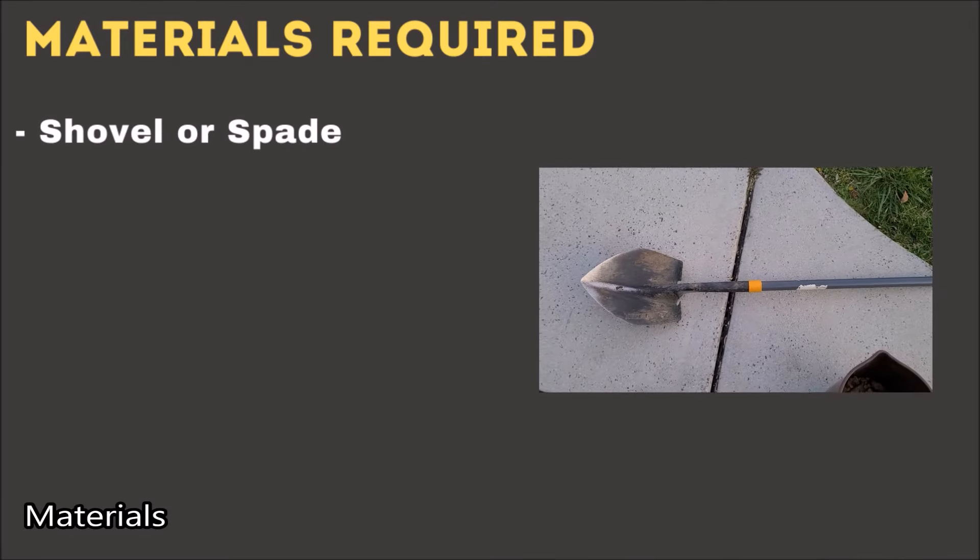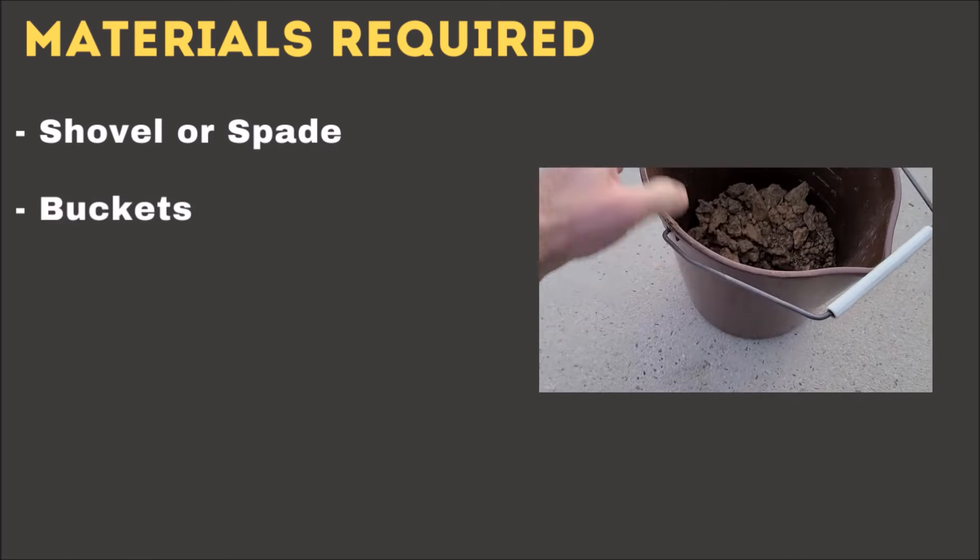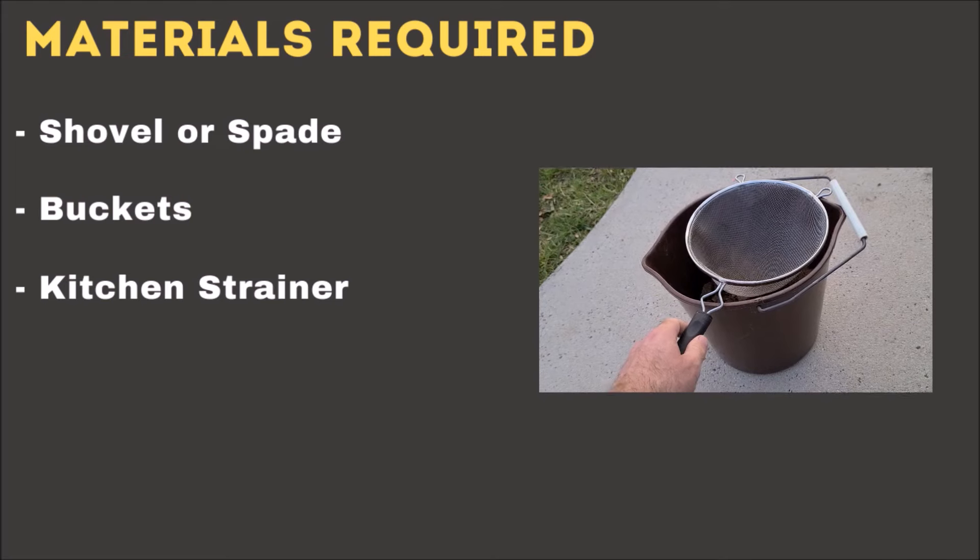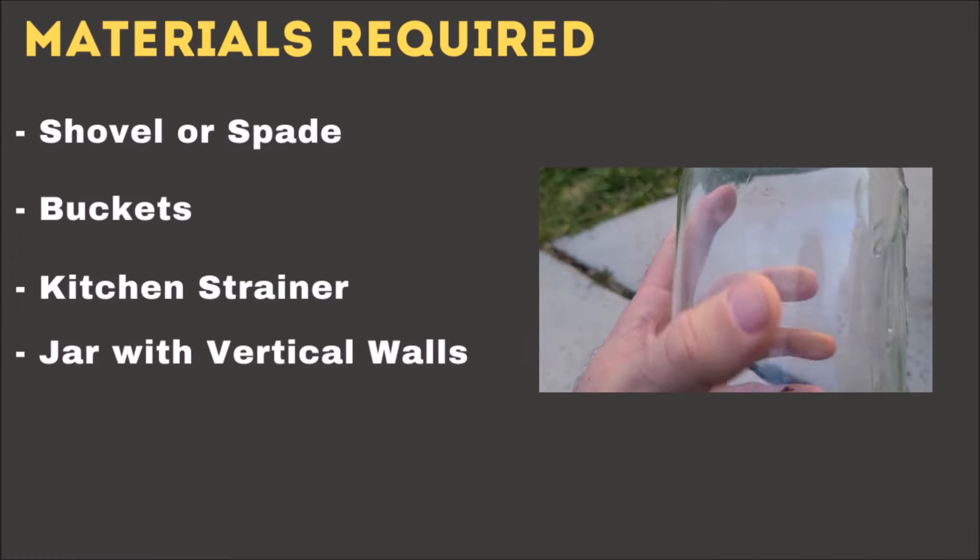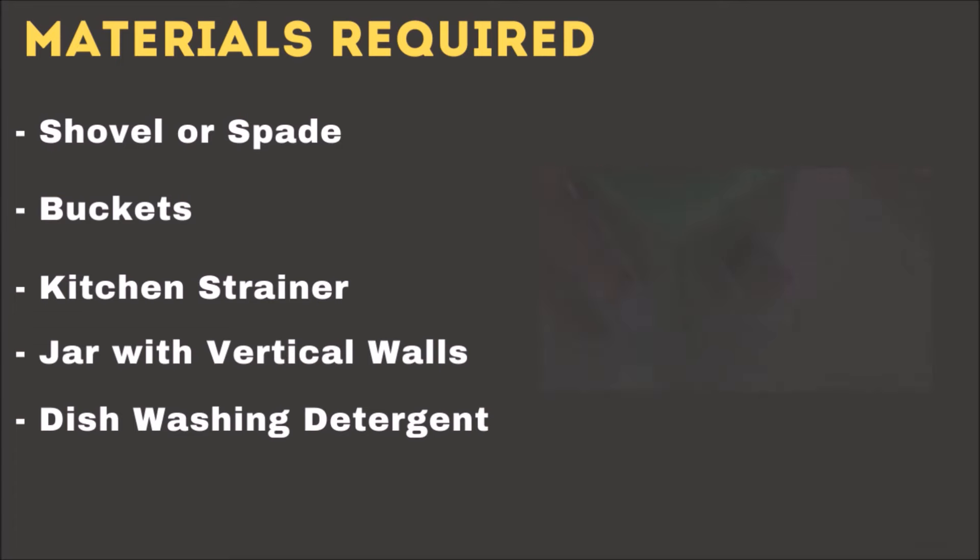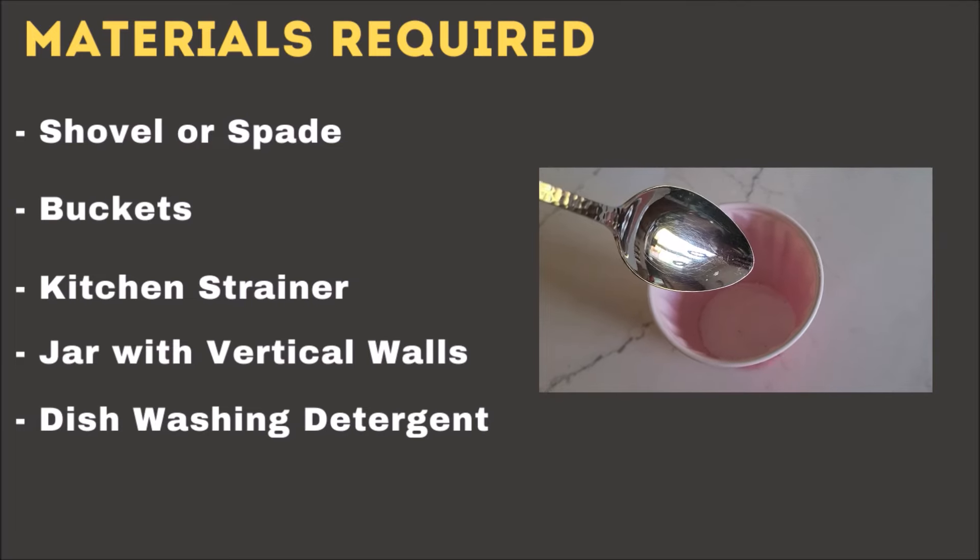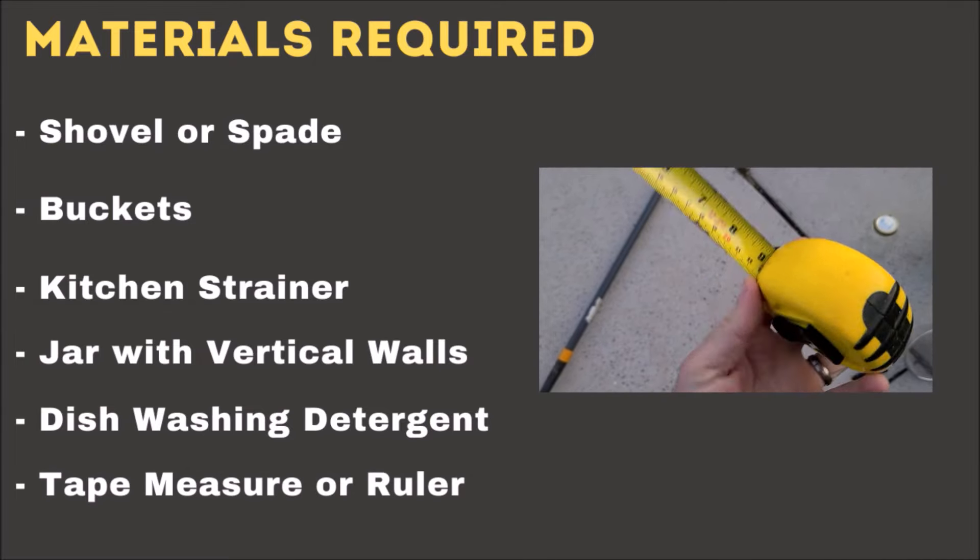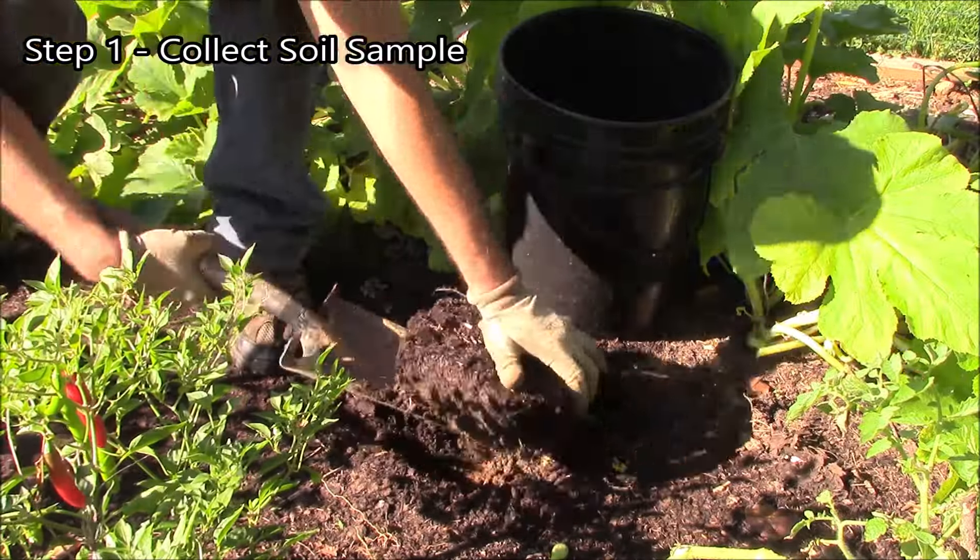For materials required, you'll need a shovel or spade, a couple of buckets, a common kitchen strainer that can fit in your bucket, a jar with vertical walls like mason or canning jars, some powdered dishwashing detergent, and finally a tape measure or ruler and a marker. If your tape measure has metric, so much the better.